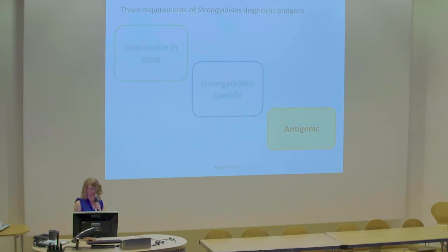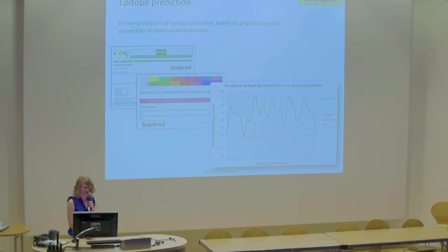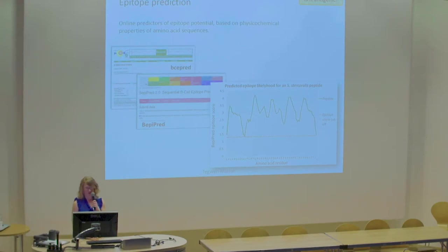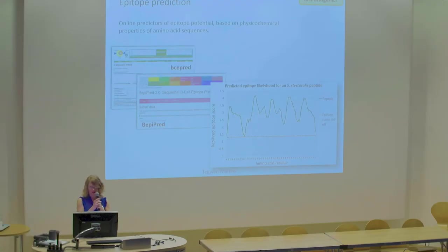The final criteria was something that's antigenic. To look at this, I started with epitope prediction. There are quite a few different online epitope prediction tools based on the physicochemical properties of the amino acid sequence. I used two: BepiPred and BCEPred. This graph shows an idea of the output — this is a particularly high-scoring peptide where the amino acid residues are along the x-axis, and the green line represents the score given by the prediction tool, all above the dashed red line which is the threshold.